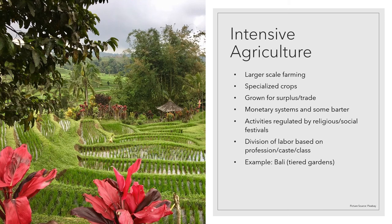A good example of intensive agriculture is in Bali, with the tiered rice gardens. Bali is an island where freshwater is scarce — the main source is a volcanic lake at the top of the largest mountain in the center of the island. There are water temples where at various times during the year there are different festivals, and those festivals are timed to open the gates of the water distribution system so that different fields get watered at different times. The water from fields above flows down into fields below, and is also high in nitrogen because the fields attract ducks and other waterfowl as well as fish. It's a very efficient system, but all highly regulated by religious festivals.